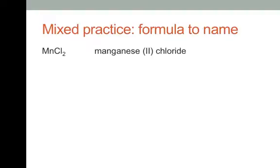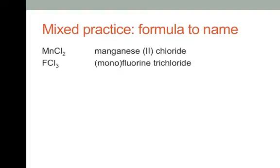Next one: FCl3 — pause and try it yourself. Fluorine and chlorine are both non-metals, so we use the covalent system of naming with Greek prefixes. One fluorine, three chlorines: this would be monofluorine trichloride. The 'mono' is in parentheses because you would probably just leave it off.